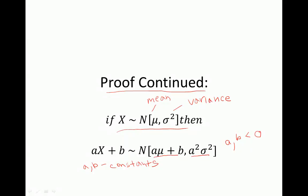In that case, if mu was positive, we could have a times mu plus b be negative, so the new mean would be less than zero. But a squared times sigma squared would still be greater than or equal to zero. That makes sense because the variance always has to be positive, because it is the expected squared deviation from the mean.